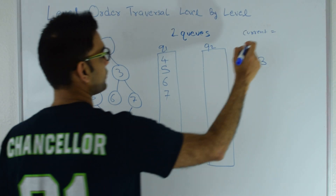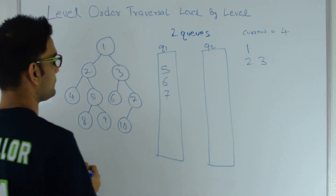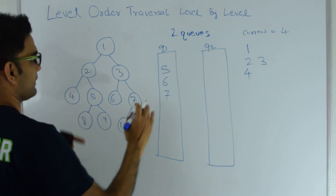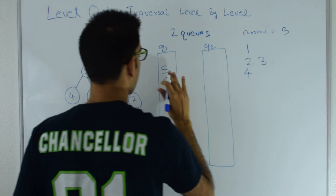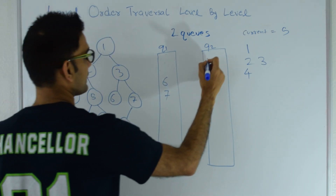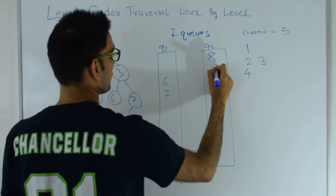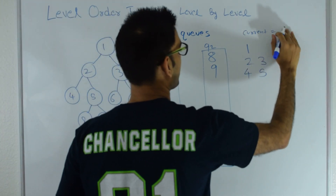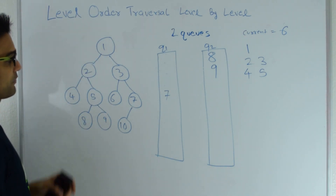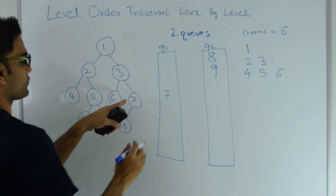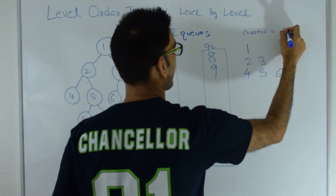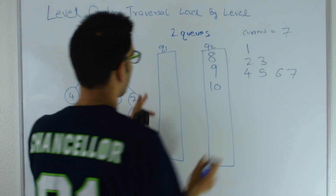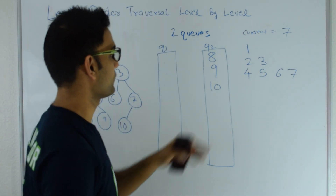We pop from q1 so current becomes 4. 4 doesn't have a left or right child so we just print 4. Then current becomes 5. 5 has a left child 8 so that goes into q2. 5 has a right child 9 so that goes into q2 and I print 5. Then I pop from q1, so current becomes 6. 6 does not have a left or right child so I just print 6. Then current becomes 7. 7 has a left child so I push that into q2 and I print 7.